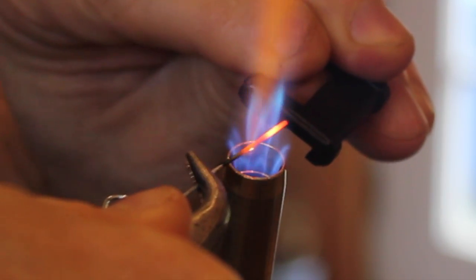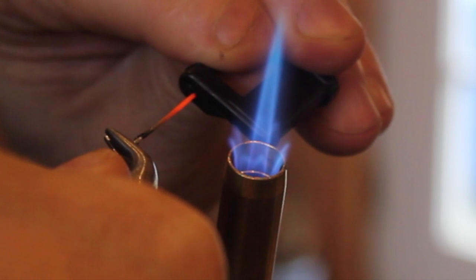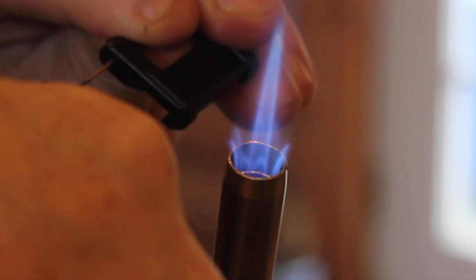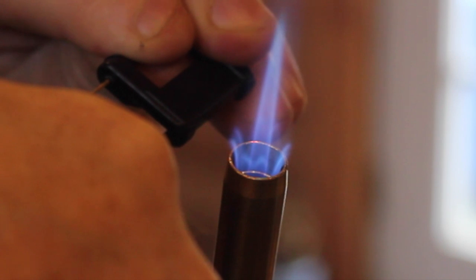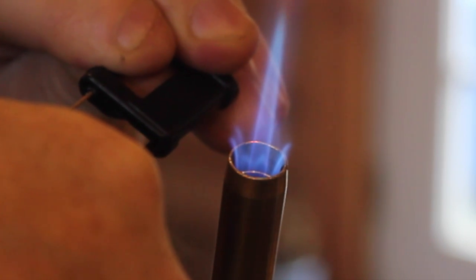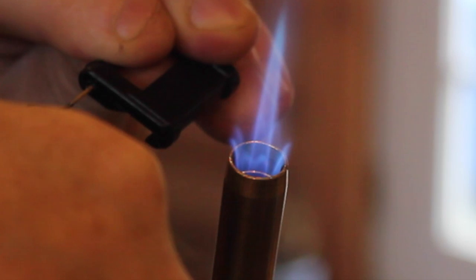So the next thing we're going to do is take a propane torch, get this paper clip cherry red, and then fuse the two pieces together. And you can see that this is really going to be structural.